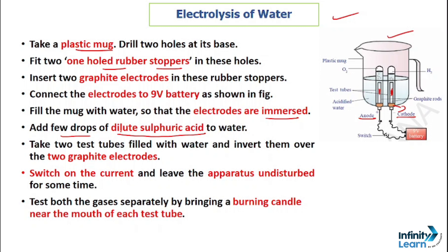Add a few drops of dilute sulfuric acid to the water. Cover the electrodes with two test tubes — both will fill with water. Switch on the current and leave the apparatus undisturbed for some time. The electrodes will start generating bubbles in both test tubes. Once the test tubes are filled with gas, take them out carefully. The test tube connected to the negative terminal collects hydrogen, and the positive side collects oxygen.